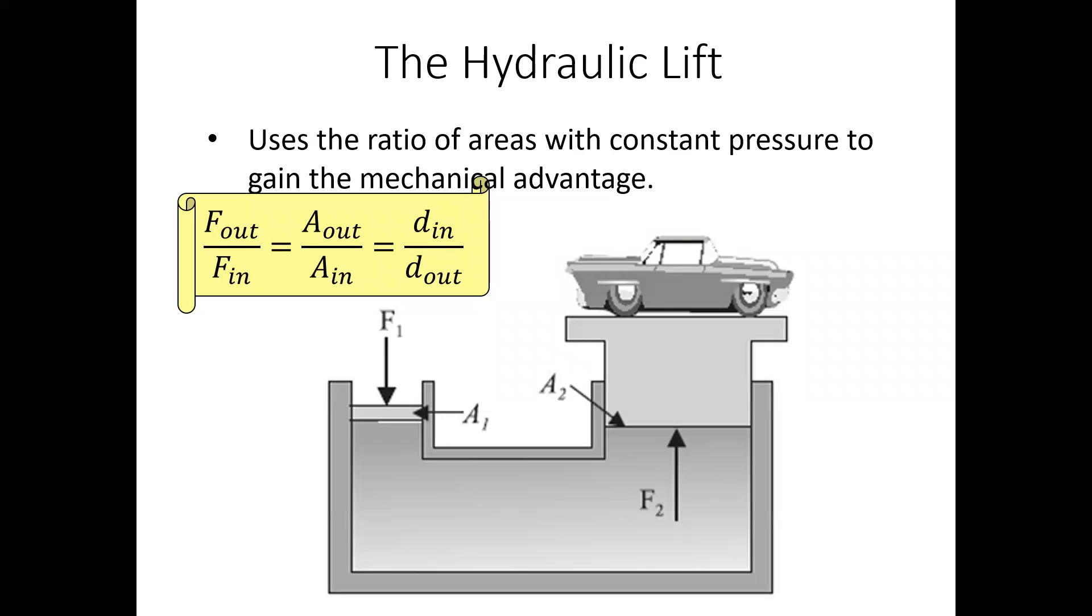That's the first equation right there. That ratio of forces is equal to the ratio of areas. So if I want to lift up a car that's like a thousand newtons, a small car, it's a thousand newtons, but I can only push a hundred newtons, obviously I need a ratio of areas for the output piston to be 10 times more than the input piston, because I can only push a hundred newtons, but I need to lift up a thousand newtons.